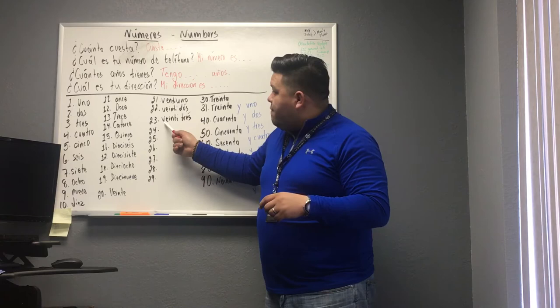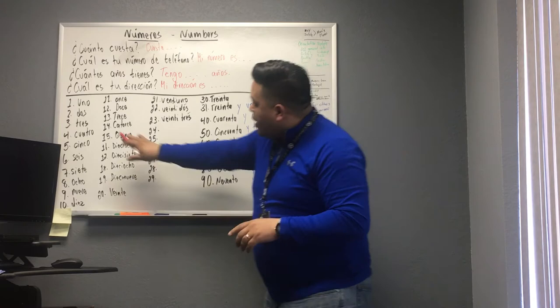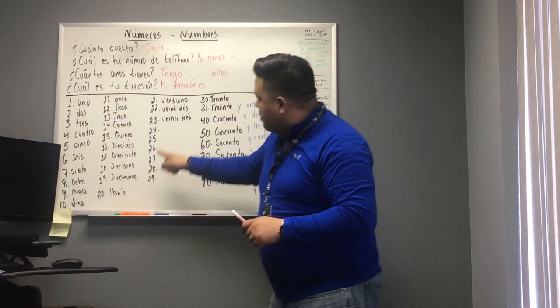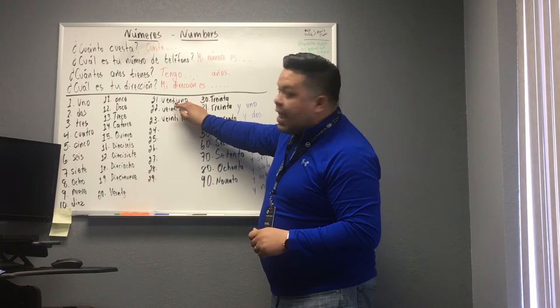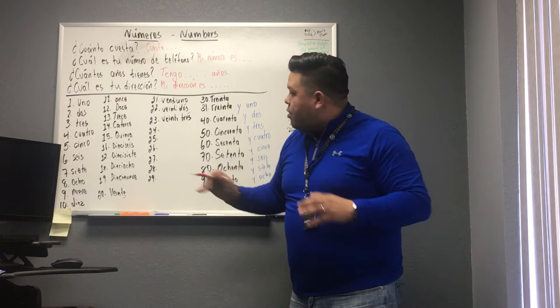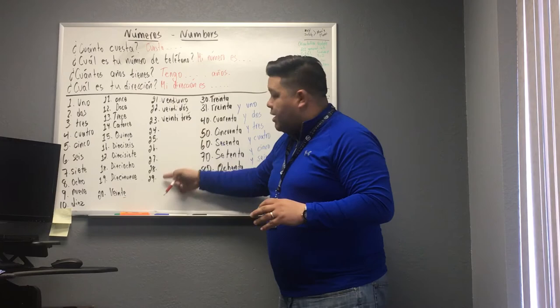Veintiuno, veintidós, veintitrés. I'm going to pause right here — from number one to twenty-nine, it's one word. The only thing is, with veinte, we eliminate the e and add an i: veinti. So: veintiuno, veintidós, veintitrés, veinticuatro, veinticinco, veintiseis, veintisiete, veintiocho, veintinueve. All one word.